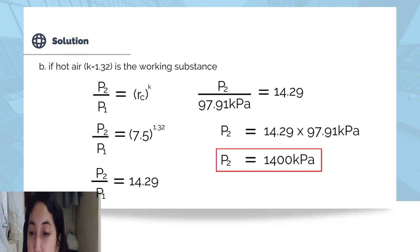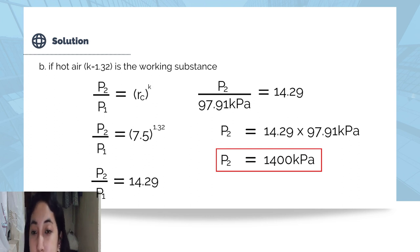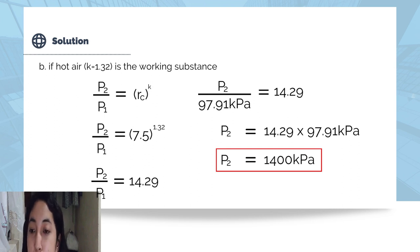For the pressure with hot air, 7.5 raised to 1.32 equals 14.29. Substituting P1 of 97.91 kilopascals, P2 equals 14.29 times 97.91, which equals 1,400 kilopascals. Using standard hot air, the pressure at the end of compression is 1,400 kilopascals.